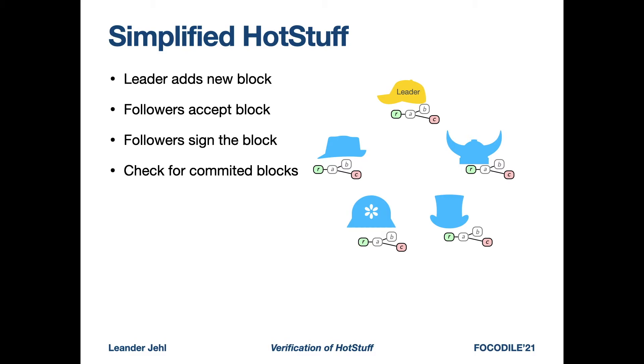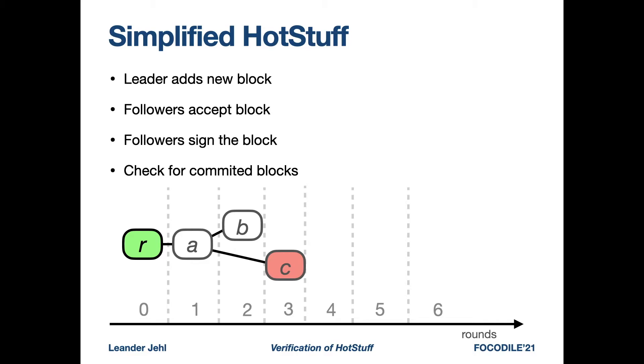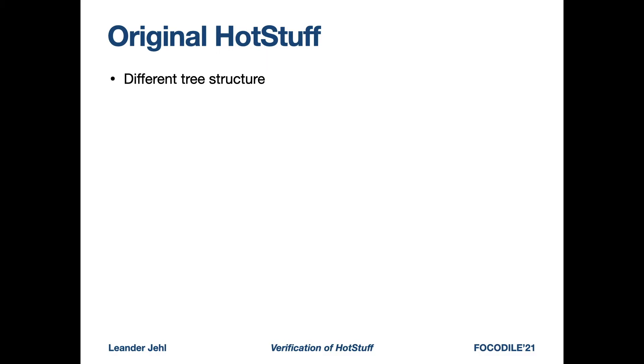So to summarize the protocol, let's play through an example. Here the leader proposed block C in round 3. The followers sign it and the leader can propose a new block D in round 4. Followers sign it again and the leader can propose a new block. Now, block F commits block C, and when block C is committed, the whole branch up to C is committed. So also block A is committed.